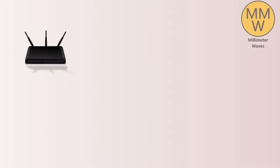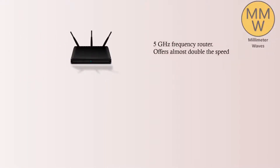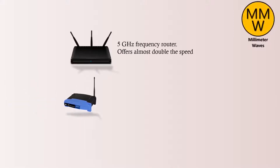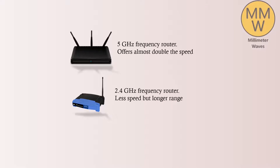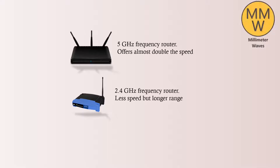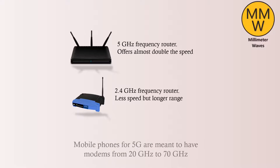Another noteworthy point is that wireless routers in our homes operate at 2.4 GHz and 5 GHz frequencies. A router with 5 GHz frequency provides nearly double the speed compared to a 2.4 GHz router, because the waves have almost double the frequency. If we increase the frequencies, we can increase the speed — but increasing the frequencies has its own problems as well.